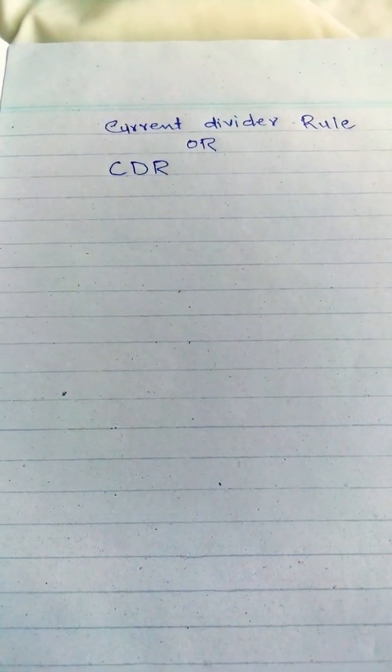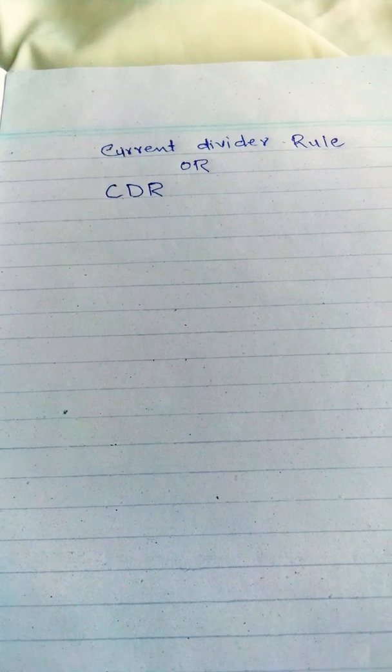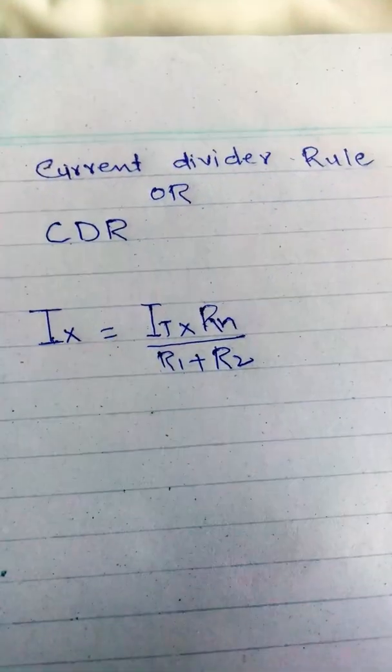Today we discuss CDR, or Current Divider Rule. We use the current divider rule for any parallel circuit when we are given total current, R1, and R2, but voltage is not given. In that case, we use the current divider rule and simply find i1, i2, i3, and so on.